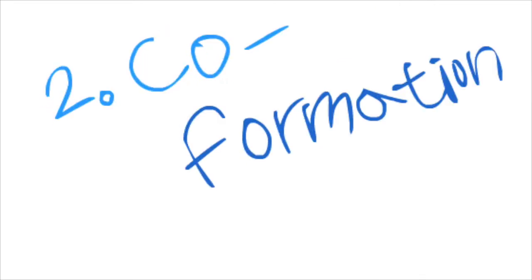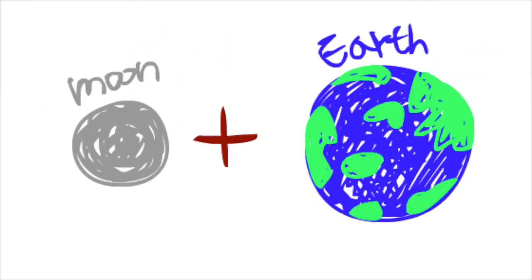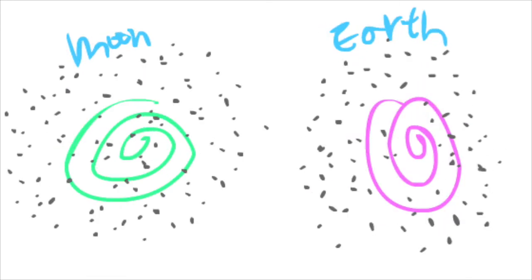The second theory is the co-formation theory. This theory basically claims that the moon was formed at the same time as the Earth. During the early solar system, the gravity gathered materials together to form the moon at the same time as the gravity united particles to form the Earth.